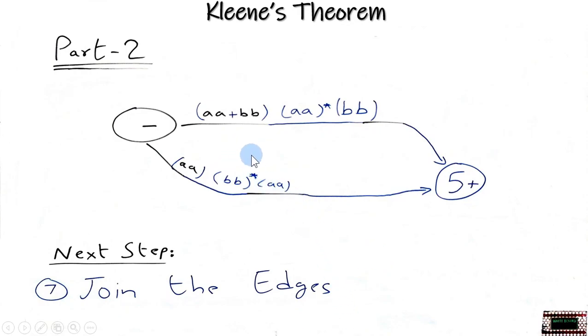Till now we have formed this transition graph which shows that either this expression could lead us to the final state or this expression could lead us to the final state. So there is an OR here. So we will join the edges in the next step.